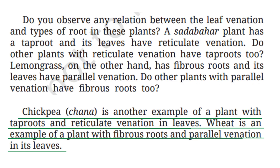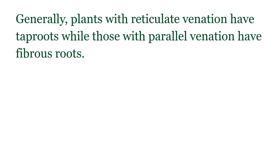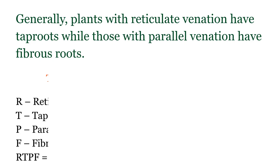So we can conclude that plants with reticulate venation have tap roots, while those with parallel venation have fibrous roots. Remember this plant fact using the mnemonic RTPF — R stands for reticulate venation, T for tap root, P for parallel venation, and F for fibrous root. Remember: RTPF!